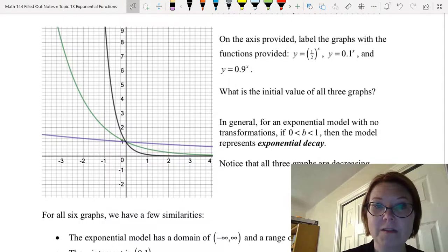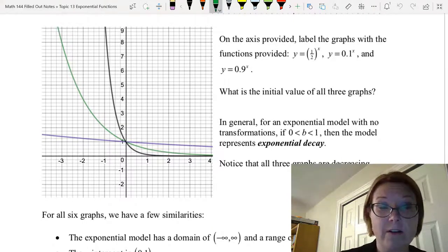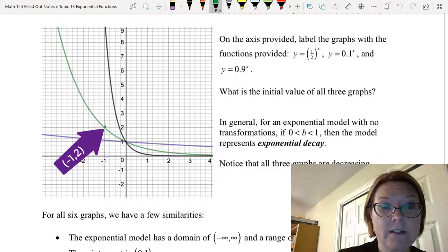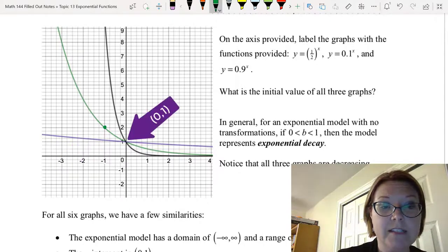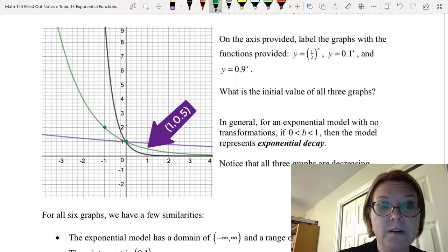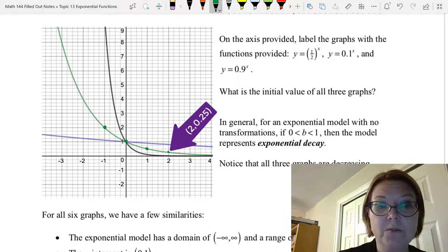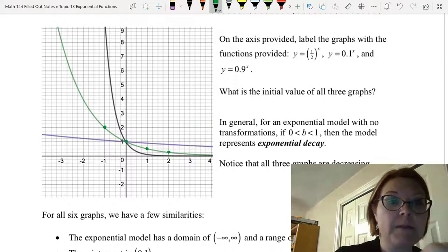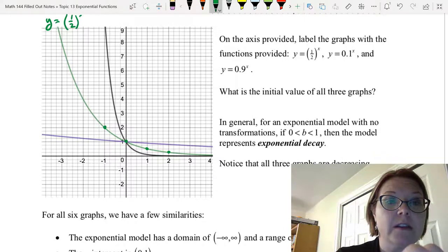Let's go label this one in the notes. In the notes, this is the middle graph, the green graph, if you have a colored graph. We had points at negative 1, 2, at 0, 1, at 1, 1 half, and at 2, 1 fourth. We'll label that one y equals 1 half to the x power.